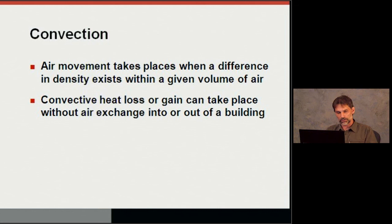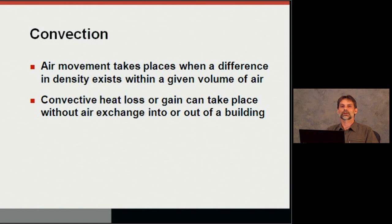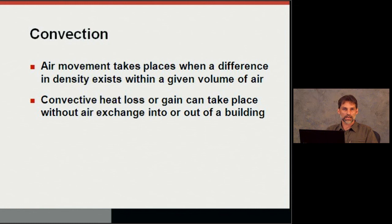Convection is the third way we discuss heat movement in and out of our buildings. It's really air movement that takes place when a difference in density or temperature exists. The warmer the temperature, the lighter and less dense the air; the colder, the more dense. Near a window, air passes through and cools off, becomes dense, and pools down where a child might be playing or where your feet are — creating cold feet. That convective loop drives heat loss: warm air rises, comes into contact with a wall or window, and sets up a pattern that aggravates heat loss.